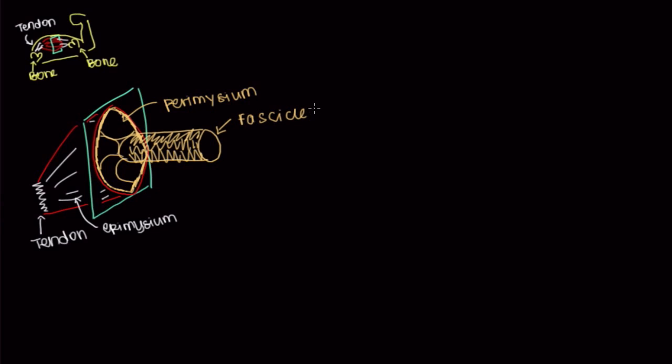It's got two names actually. So it can be called a fascicle or it's also known as a fasciculus. So it depends on whether you're talking about fascicles or a single fasciculus. And then within the fascicle, there's another connective tissue layer. This is called the endomysium.